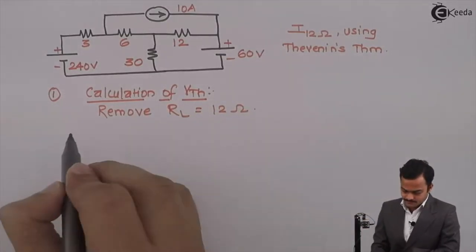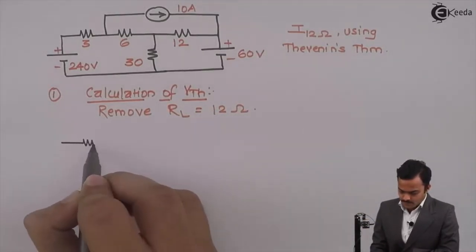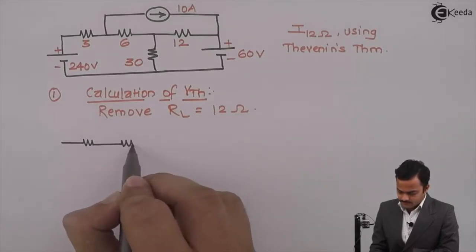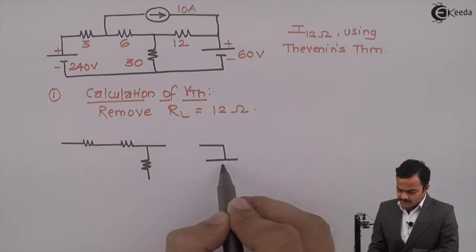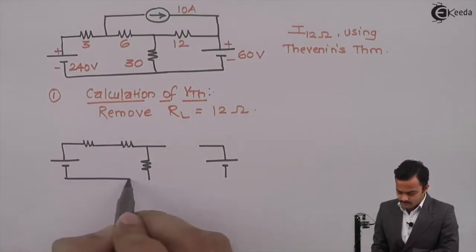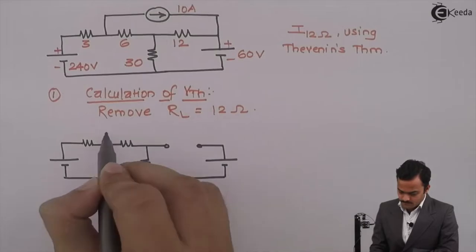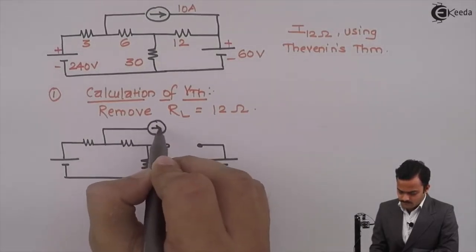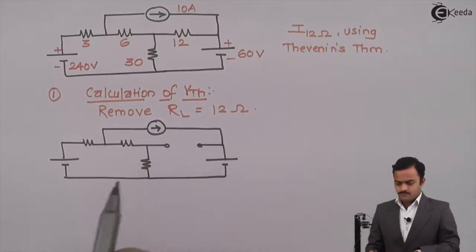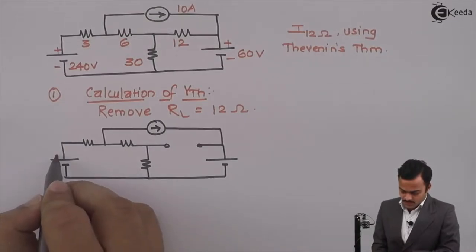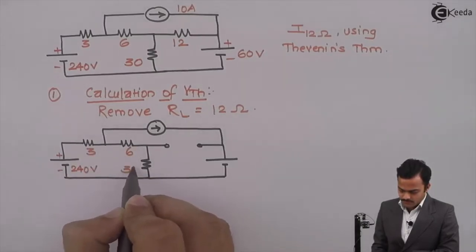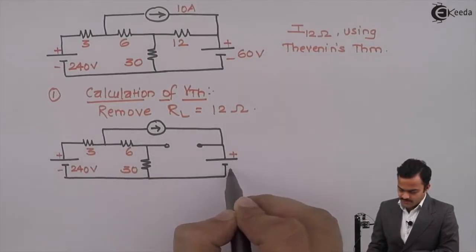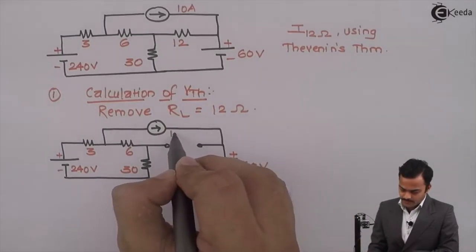You will get a circuit without RL. Rest of the part of the circuit will remain as it is. This is 240 volt, 3 ohm, 6 ohm, 30 ohm, battery of 60 volt and a current source of 10 ampere.